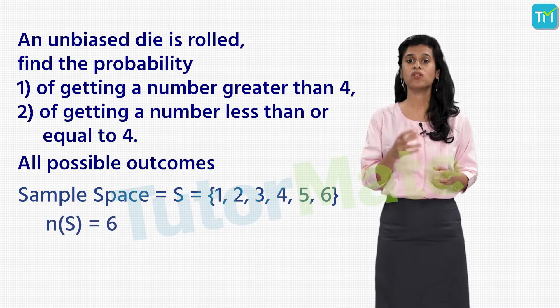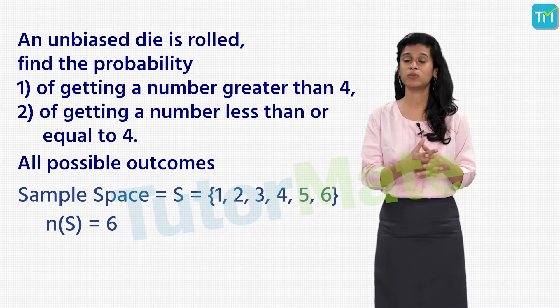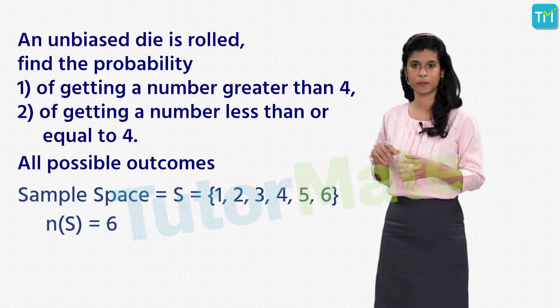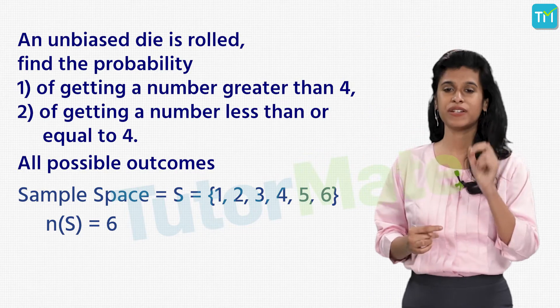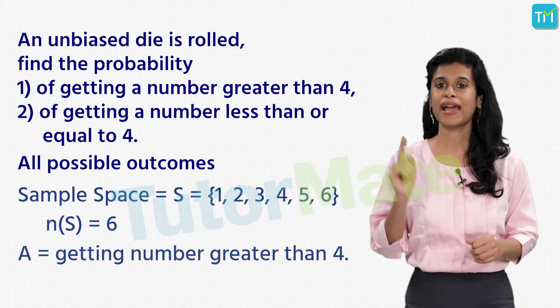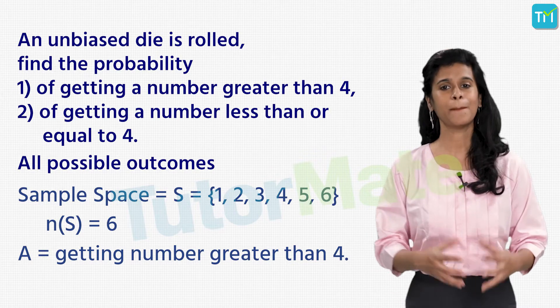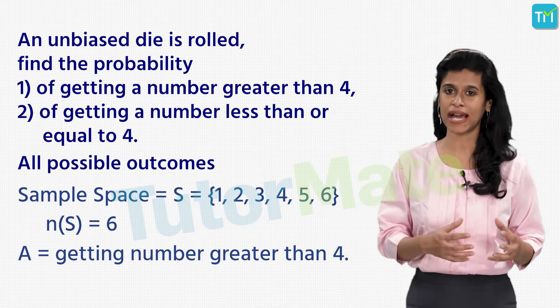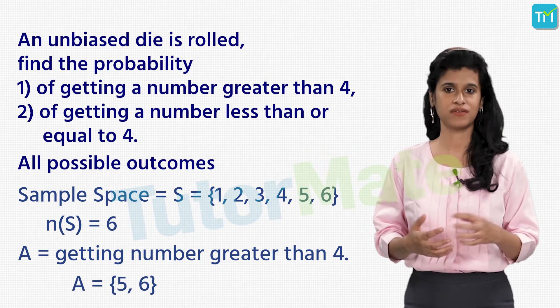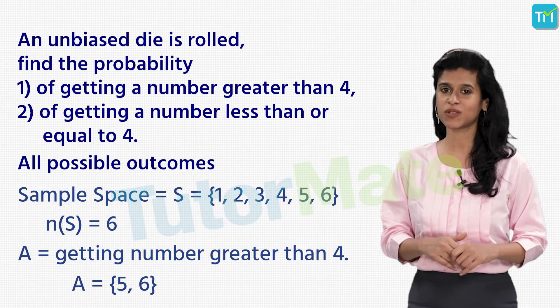Now we will find the probability of the first event, which is getting a number greater than four. So this is our favorable outcome or event, and we will denote it by A. We then have A is equal to getting a number greater than four. Now the numbers greater than four on a die are five and six, so the numbers five and six are our favorable outcomes. By the way, will four also be included as an outcome? Think about it.